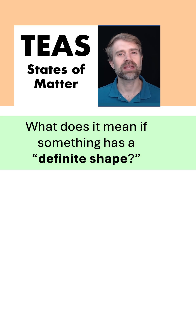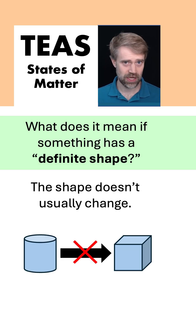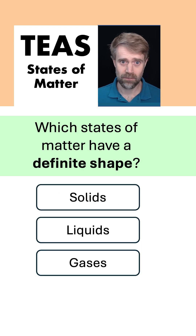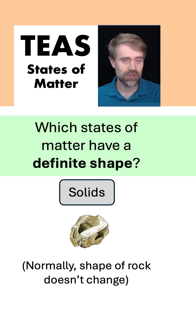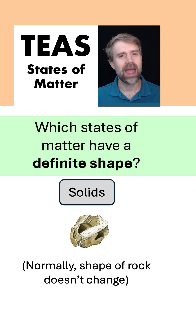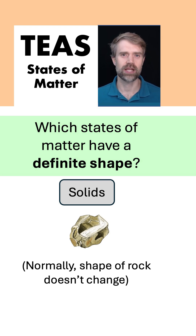What does it mean if something has a definite shape? It means that the shape doesn't usually change. So which states of matter have a definite shape? Solids. Like this rock — you can bang it or crush it, but normally the shape of the rock doesn't change. It's definite.